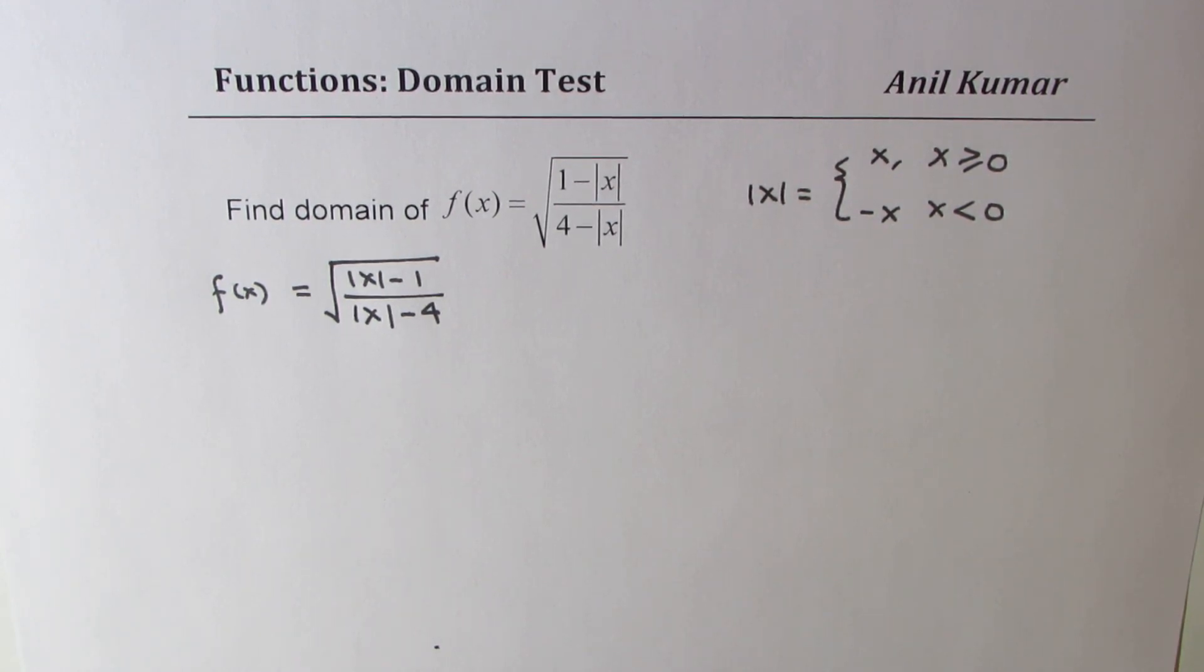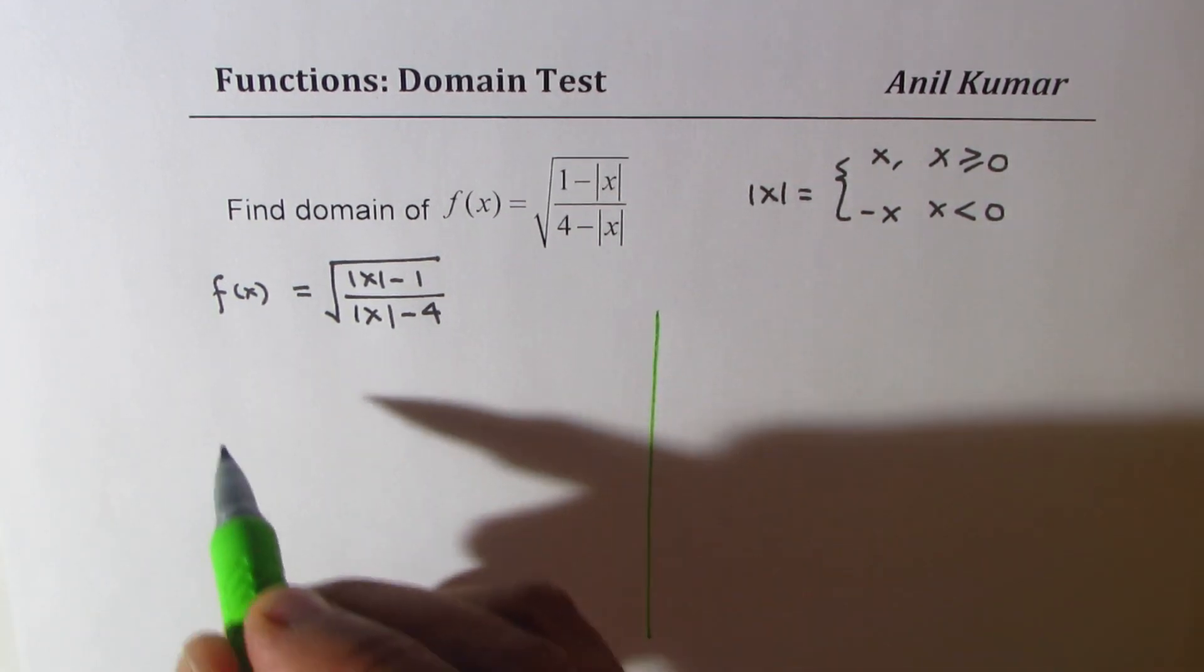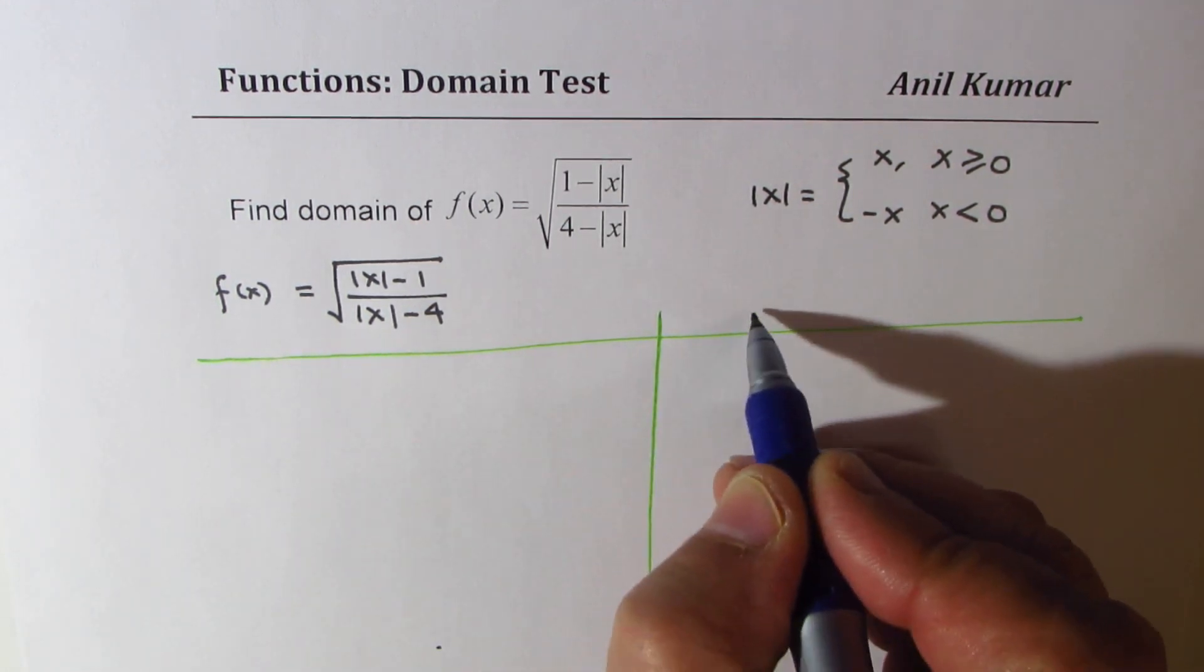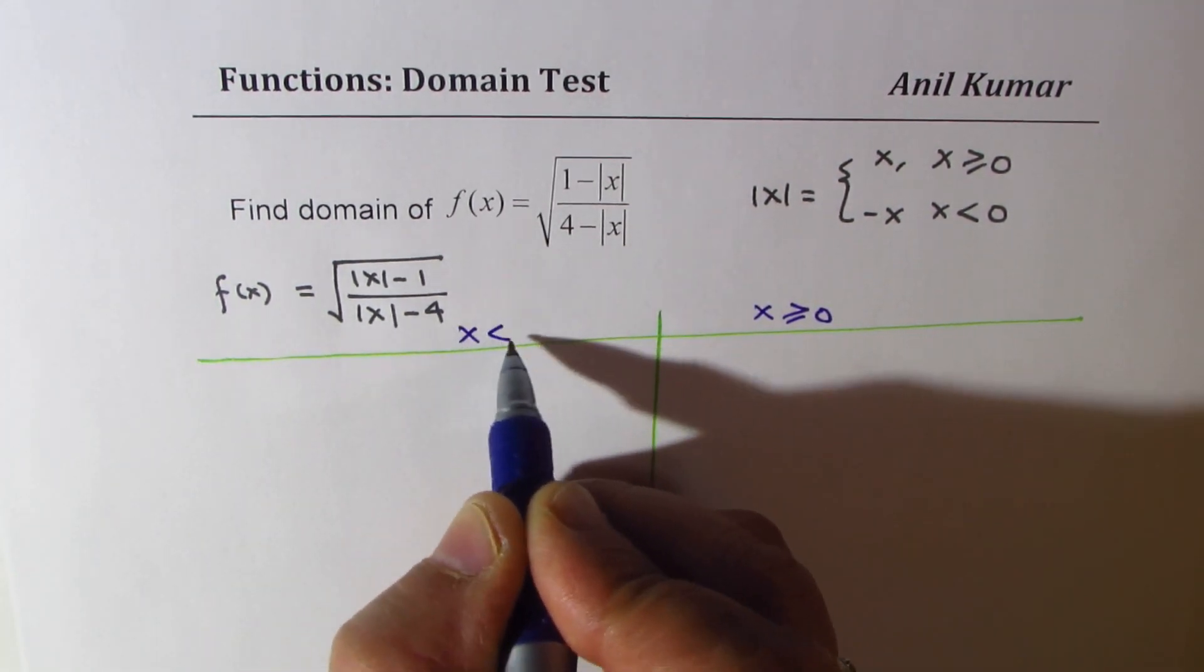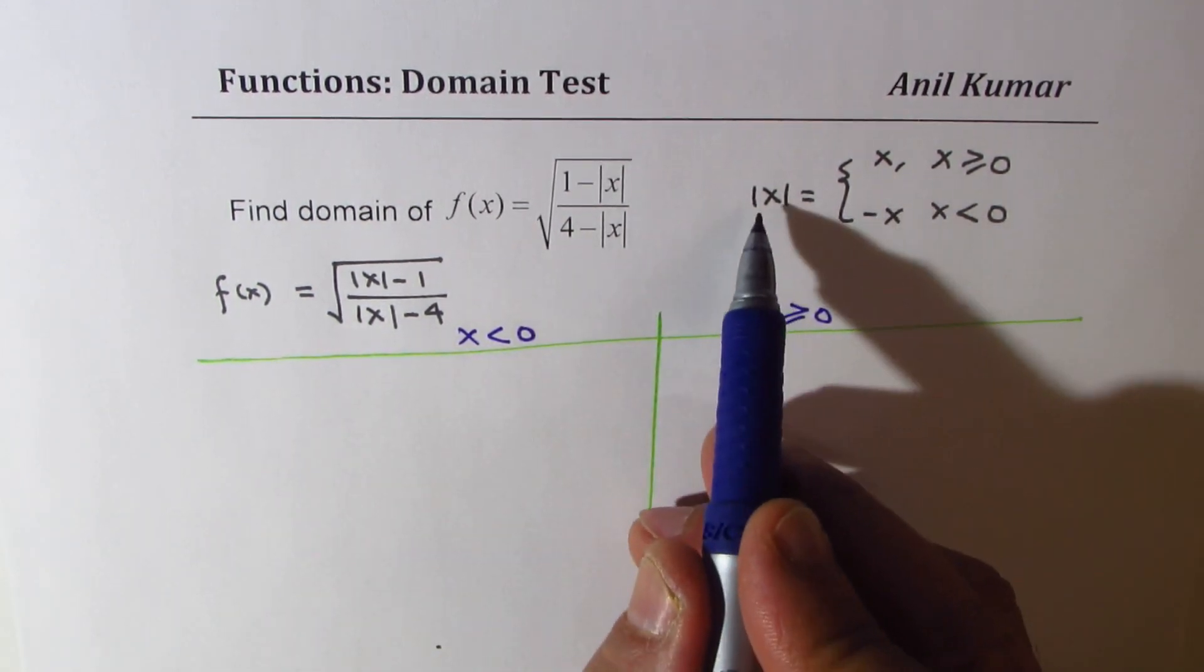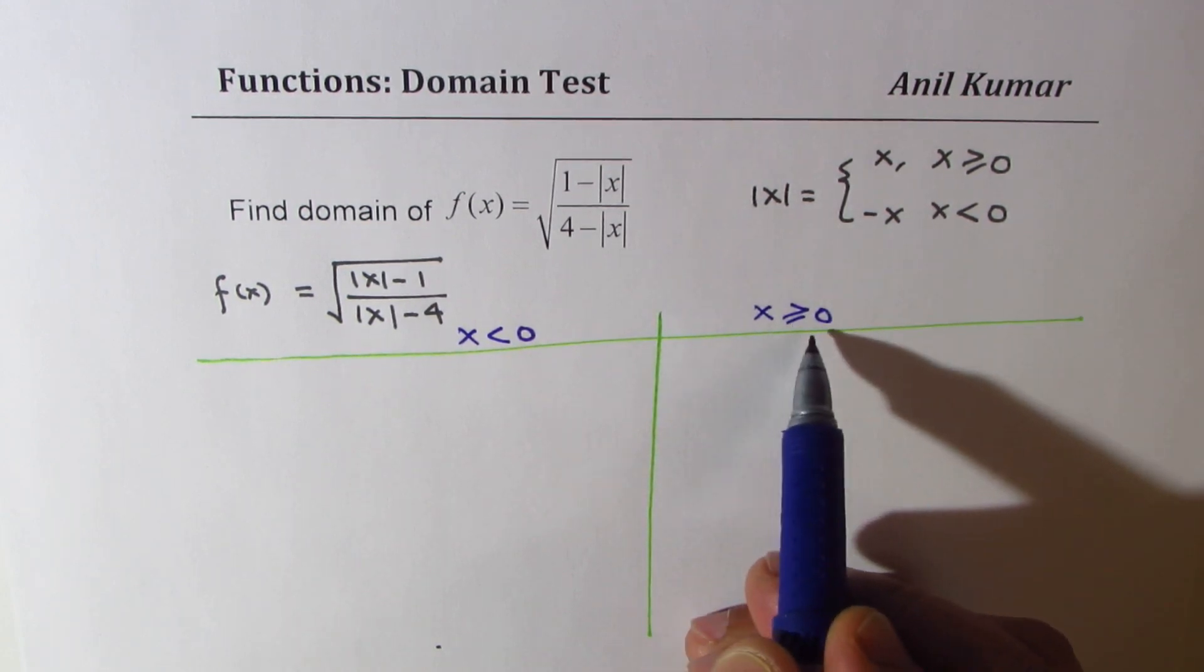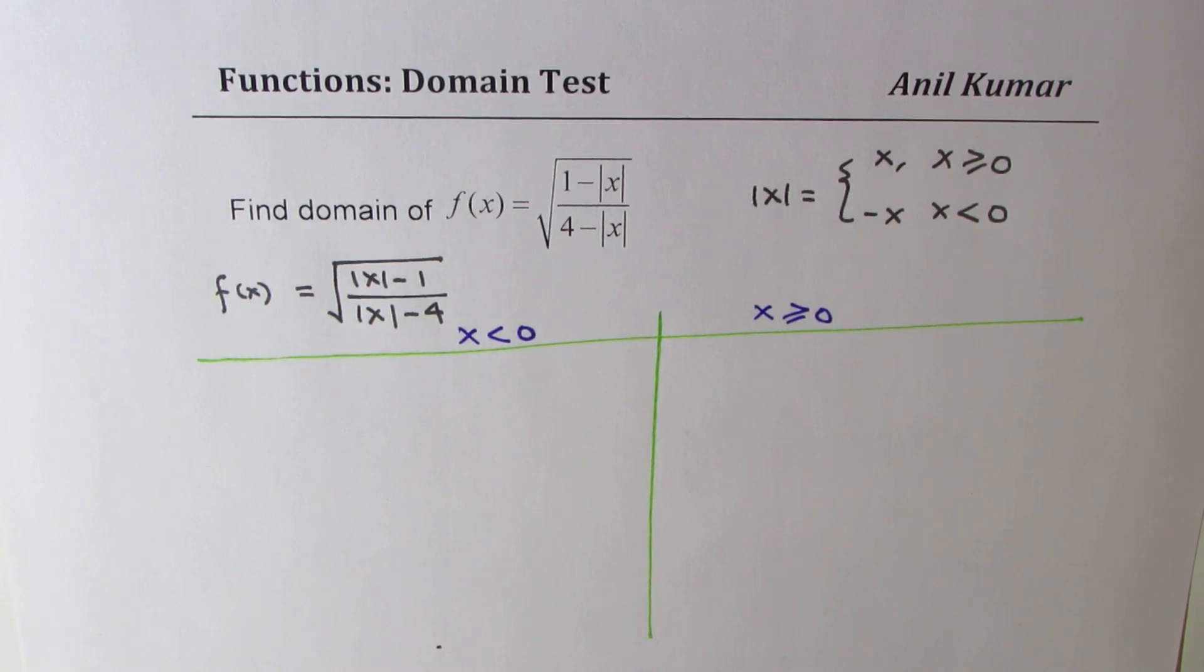Now let us divide this page into two parts and solve the question for two different intervals. One when x is greater than equal to 0, the other one when x is less than 0. Now if x is less than 0, then absolute x will be replaced by minus x and when x is greater than equal to 0, absolute x will be replaced by positive x.